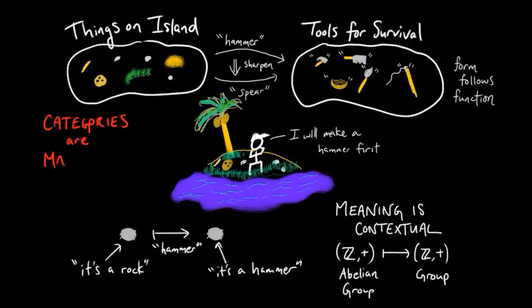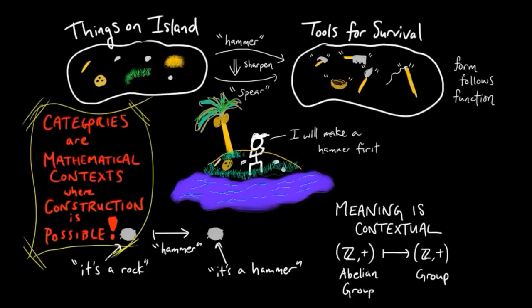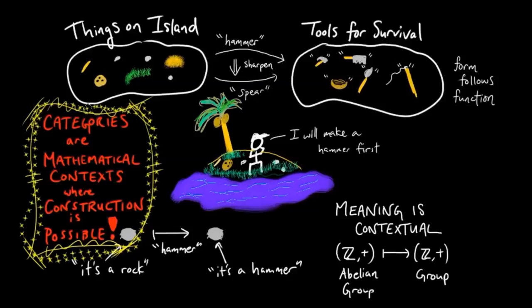Category theory forces us to consider objects as instances in contexts. A category can be thought of as a mathematical context where certain internal constructions based on what kind of context we are in is possible. We want to stress this: an object is defined by its context and not by its content.